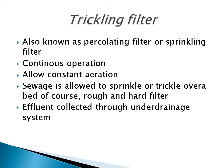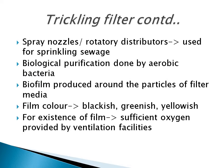In trickling filter it is continuous operation and it allows constant aeration. Here the sewage is allowed to sprinkle onto the hard filter medium and the effluent coming out from this filter is passed through the under drainage system. Different types of distributors are used to spray the sewage onto the filter bed. In rectangular trickling filter we use a network of pipes with nozzles through which we spray the sewage onto the top of the filter medium. In circular trickling filter we use rotary distributors with distributor arms, through which the sewage is sprinkled. The biological purification is done by aerobic bacteria.